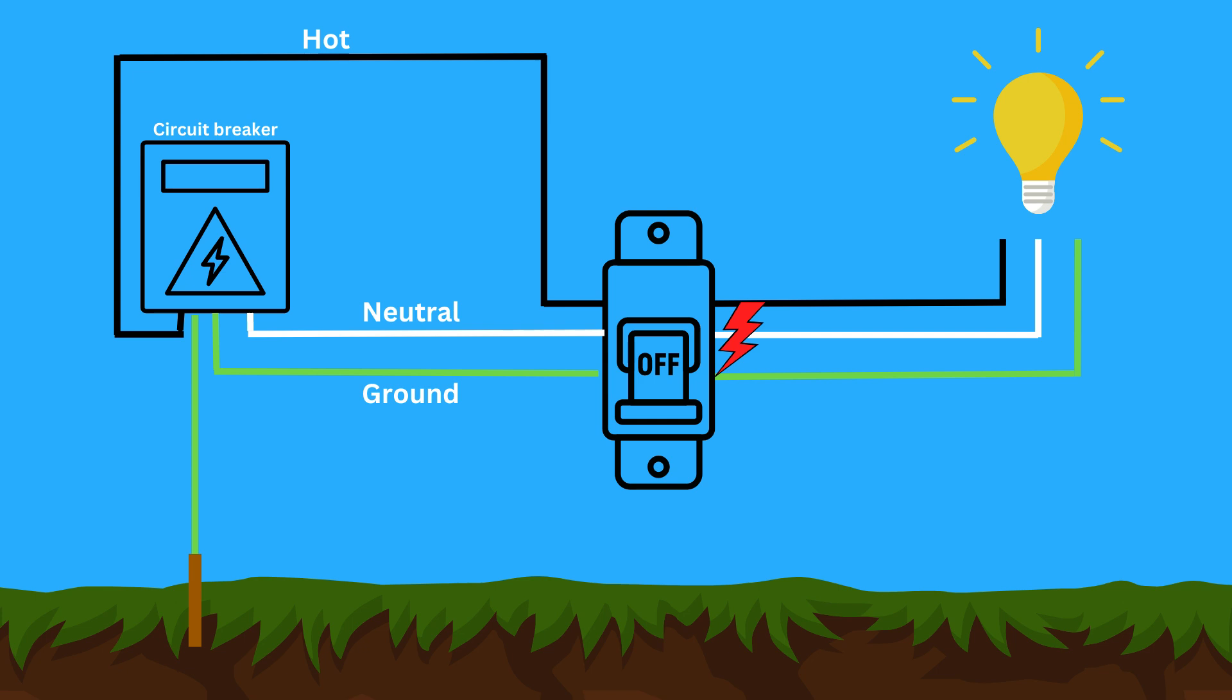Ground wires are connected to anything that might become live, such as metal pipes, light switches, and appliance casings. This ensures that in case of a ground fault, the electricity will follow the ground wire back to the panel and safely to the transformer, rather than through you.